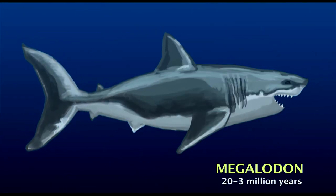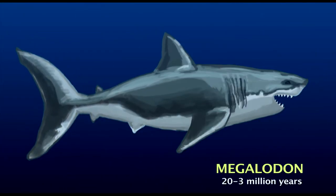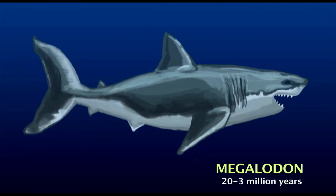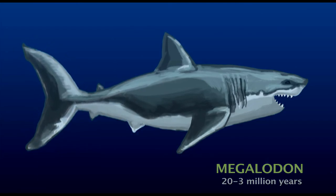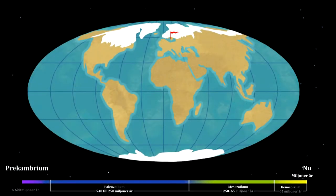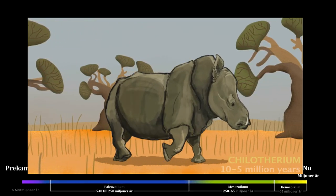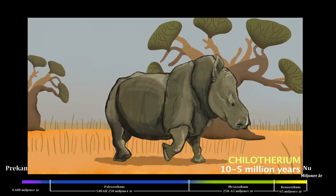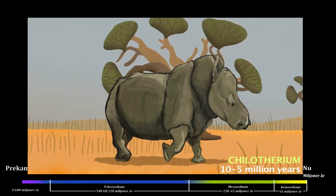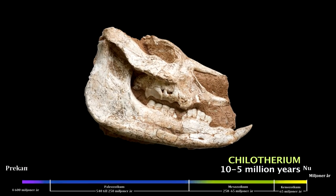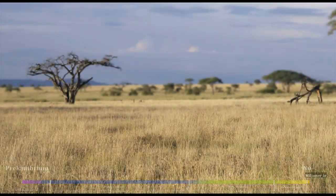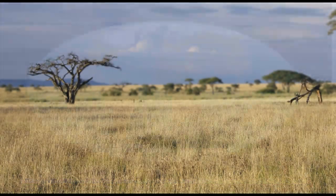The shark was so perfectly adapted to the environment that they were winners from the start. The climate oscillates between hot periods and ice ages. Here's an extinct rhino — a prehistoric species, large and robust, but without horns. On land, grass plains were forming.